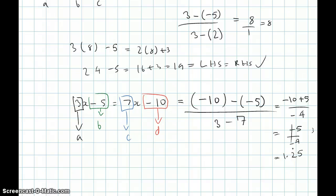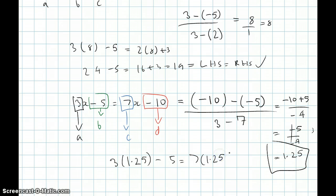But yeah, see, we got our answer. It's quite easy, this method. We got 1.25 as our answer. We can always check this out if needed. So 3(1.25) minus 5 equals 7(1.25) minus 10.